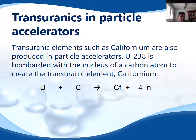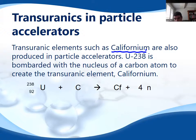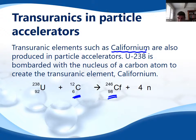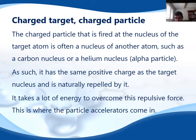Transuranic elements can also be produced in particle accelerators. For example, californium is produced through the bombardment of a uranium-238 isotope with a carbon nucleus (carbon-12, atomic number 6). What we produce is a nucleus of californium-98 and we also produce 4 neutrons as a byproduct. These escaping neutrons can sometimes be involved in chain reaction processes, which we want to control using coolants and control rods.